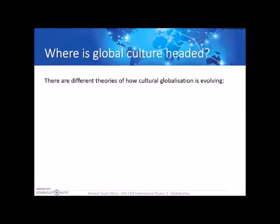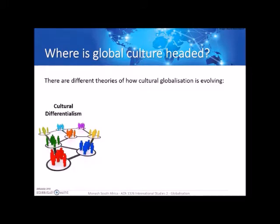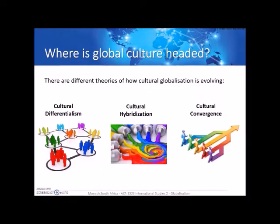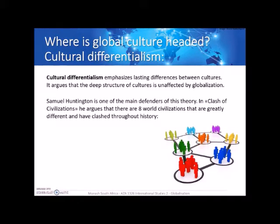Considering what global culture is, we have to ask ourselves where it is headed and how it has been evolving. There are three very different theories of how cultural globalization is evolving. One is cultural differentialism, the second is cultural hybridization, and the third is cultural convergence. We're going to look at each one, including pros, cons, and case studies.